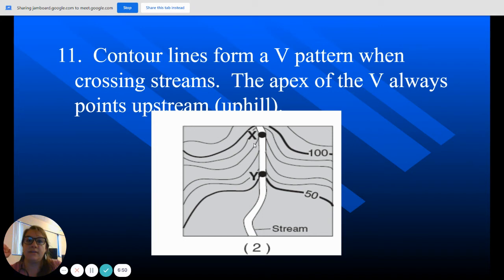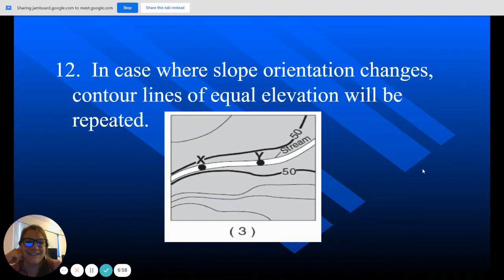So the Vs point upstream. The contour lines, when they go across the river, the Vs point upstream. Vs point upstream. You got it? Good.